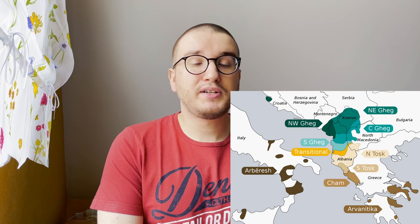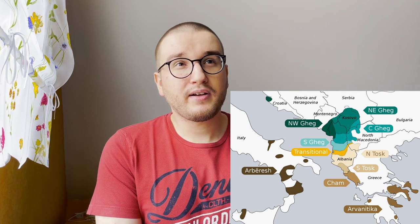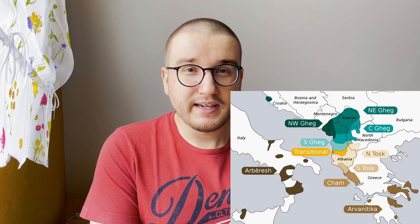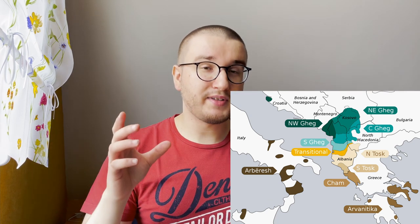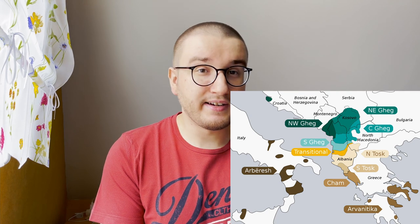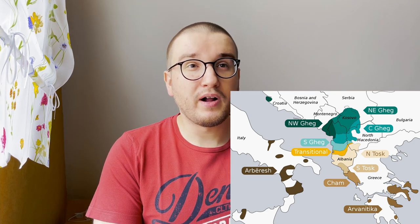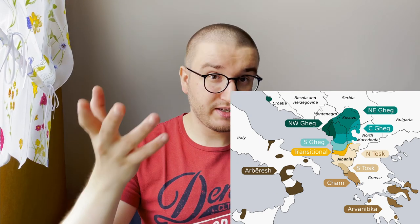We can split Albanian into two major dialects: Gheg and Tosk. Gheg is the northern dialect, spoken in north Albania, in Kosovo, and in North Macedonia. Tosk is the southern dialect. We can also split these dialects into many sub-dialects. For example, the dialect spoken in Kosovo is called north-east Gheg, while the dialect spoken in North Macedonia is called central Gheg, and the dialect spoken around north-west Albania and south Montenegro is called north-west Gheg.